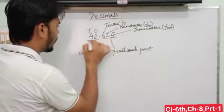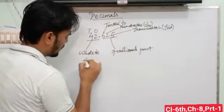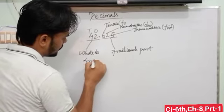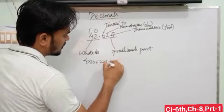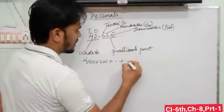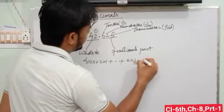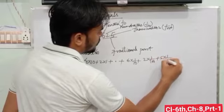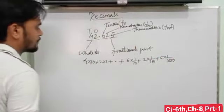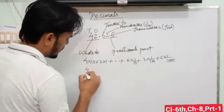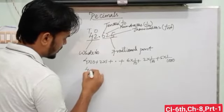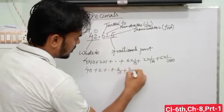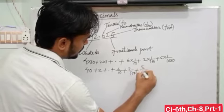So if we expand this or write in expanded form, we can write here 4 times 10 plus 2 times 1, decimal, and 6 times 1 upon 10, 2 times 1 upon 100, 5 times 1 upon 1000. So these are the places. After that we can write 6 upon 10, 2 upon 100, and 5 upon 1000.